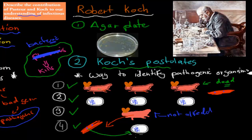Those four steps are still what we do today to link a certain pathogen to a certain disease. We look at all the different organisms that have it, see if they have the same bacteria or pathogen, then grow it, inject it into something unaffected to see if it also gets the disease, then take its blood and see if it can grow in isolation like in step two. And that's what Robert Koch is famous for.